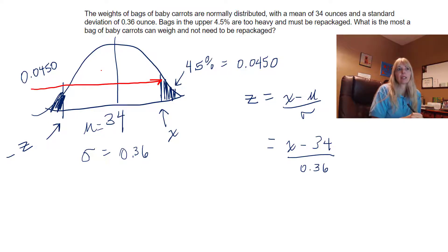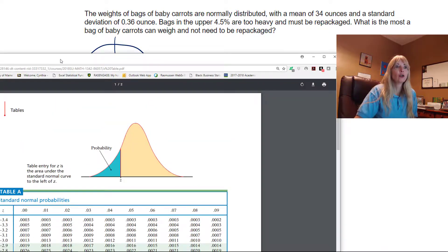So that area all the way from the bottom to that value would be 1 minus, why 1 minus? Because all probabilities have to add to 1, and you should get 0.955. So either way, let's see.